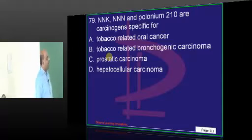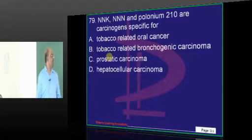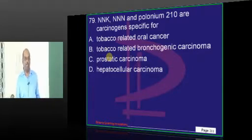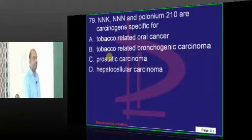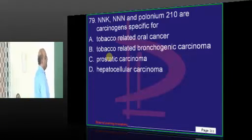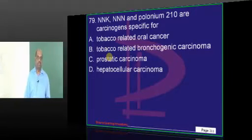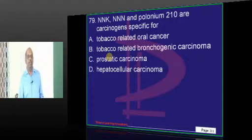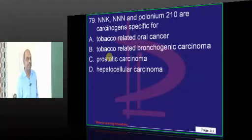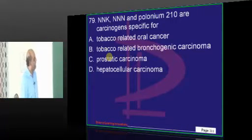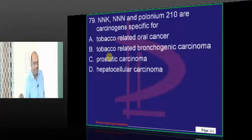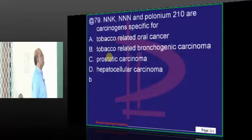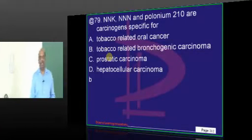NNK, NNN, Polonium-210 — they are all carcinogens specific for what? Very good — tobacco-related bronchogenic carcinoma.